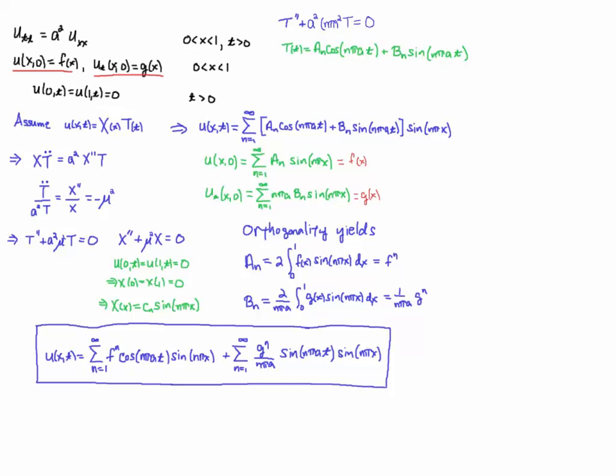And now I can just write the final solution. And I split it. Instead of writing it this way with my a_n's and b_n's, I can actually split the sum in two. So I have a cosine part and a sine part.